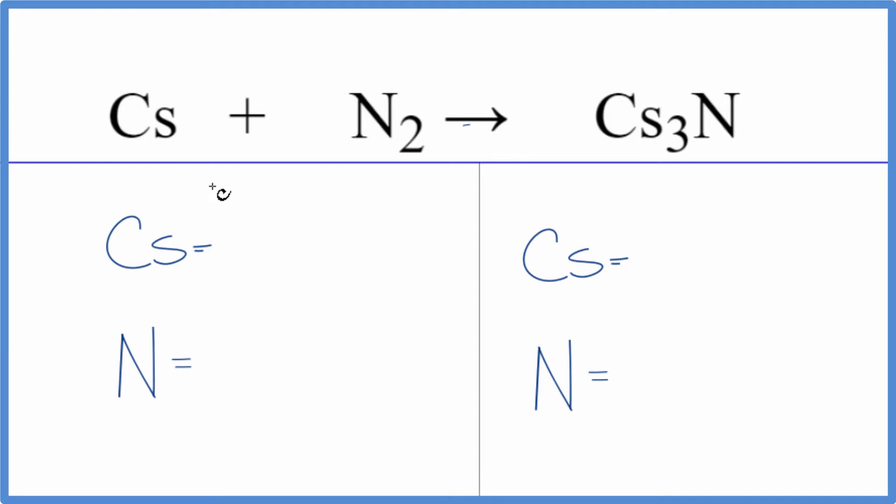There's nothing written after the Cs, we assume that to be one. Two nitrogen atoms. We have three Cs atoms here and then one N here. Let's leave the Cs till the end, that's all by itself. Let's balance these nitrogens first.